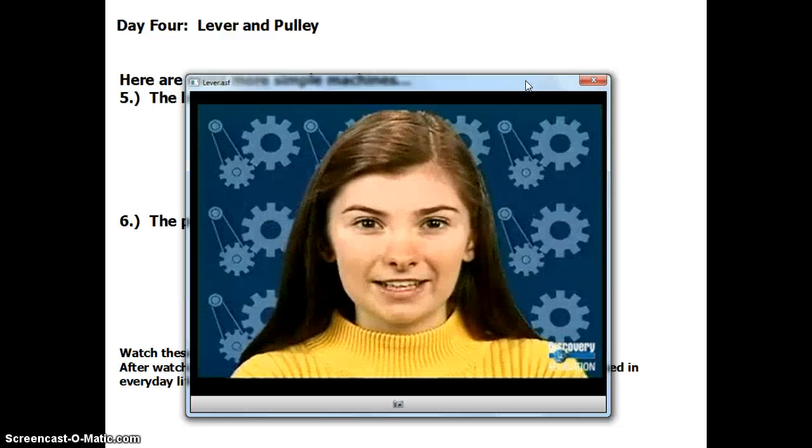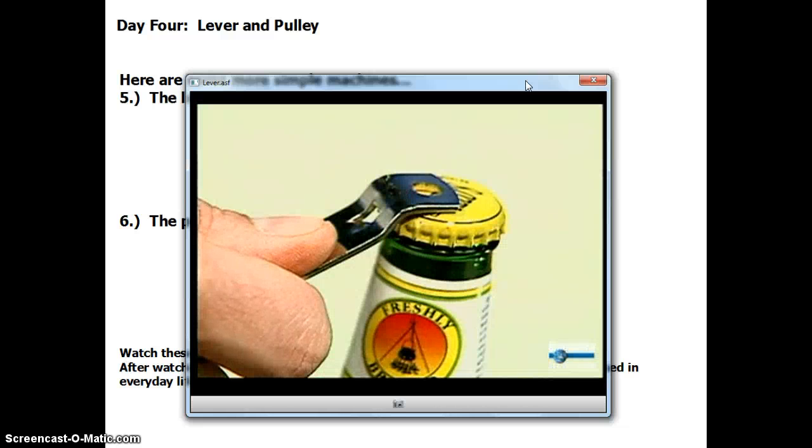Another example of a second-class lever is a bottle opener. Here is the fulcrum on one end, the load is the bottle cap in the middle, and the effort opposite the fulcrum.